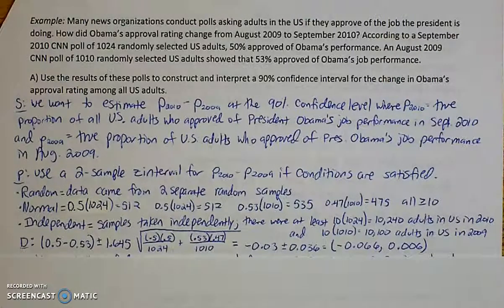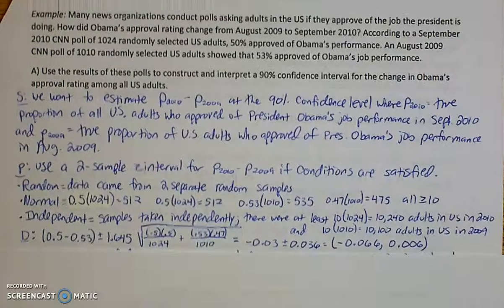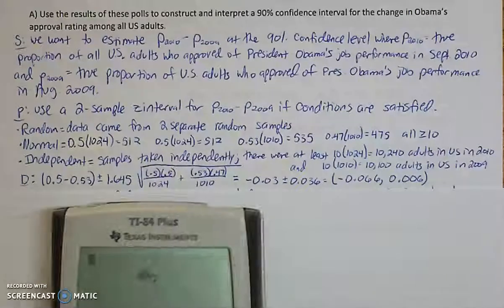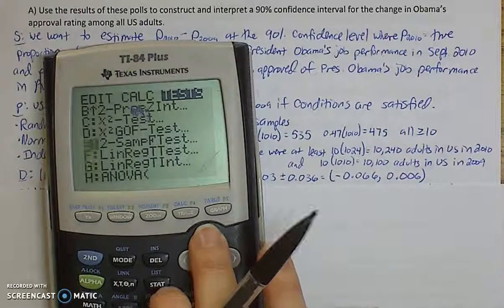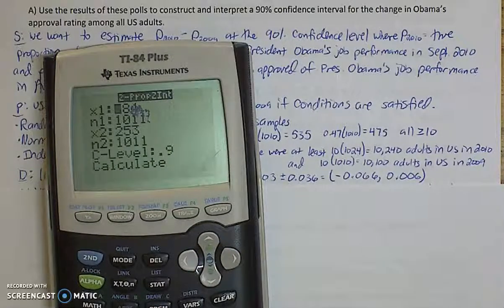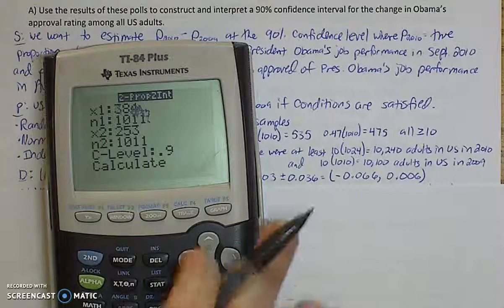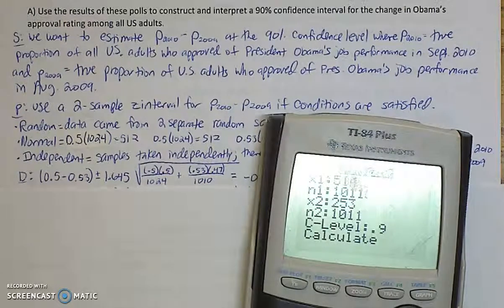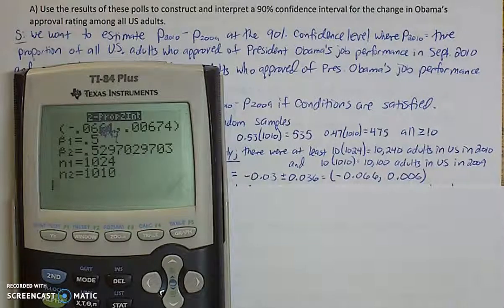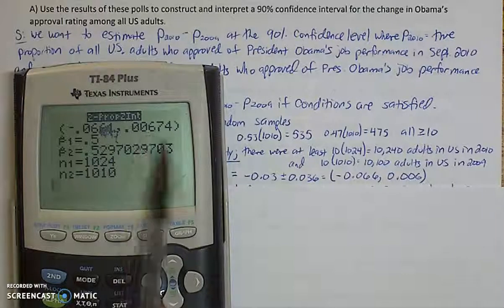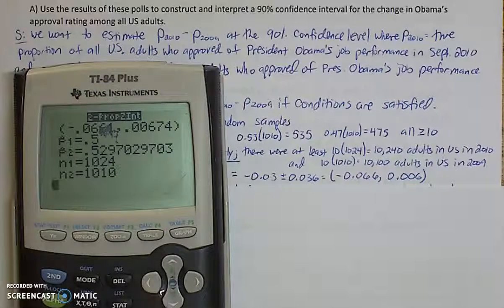Let's go ahead and do our calculations. You have to write out your formulas, but I want you to use your calculator to verify that. I'm going to go to stat, tests, and then option B is a two-proportion Z interval. You have to enter in X and N. So ours were 512 and 1024, and then the other one was 535 and 1010, at a 90% confidence interval. And look, my math holds up right here — P-hat sub 1, P-hat sub 2.